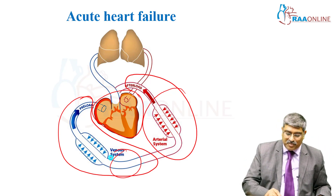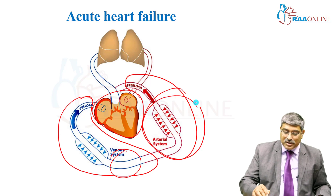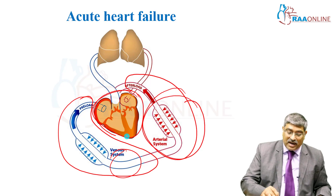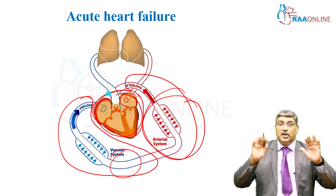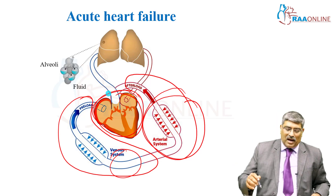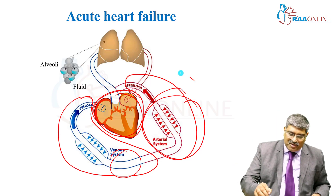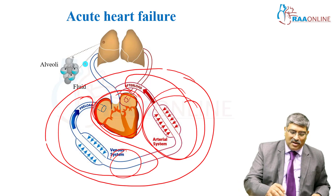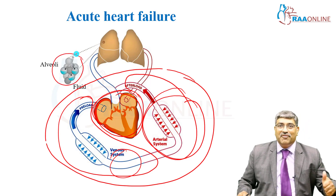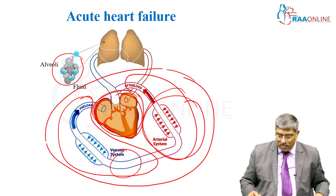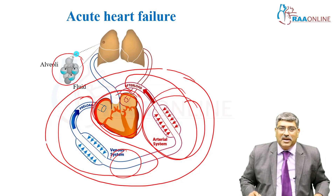Your volume management has to be accurate, your afterload reduction should be good, and contractility should not be deteriorated further. If these three things are not managed properly, fluid is going to go into the alveoli and the patient will develop acute pulmonary edema.